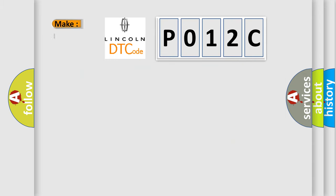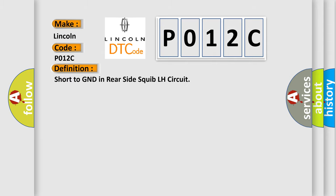So, what does the diagnostic trouble code P012C interpret specifically for Lincoln car manufacturers? The basic definition is Short to GND in rear-side squib LH circuit.